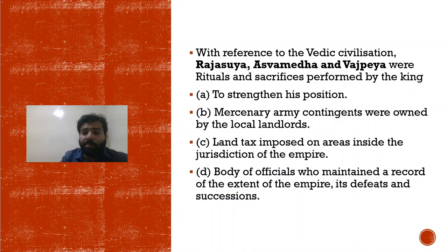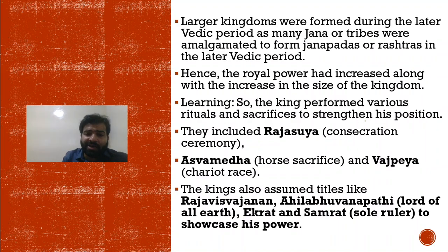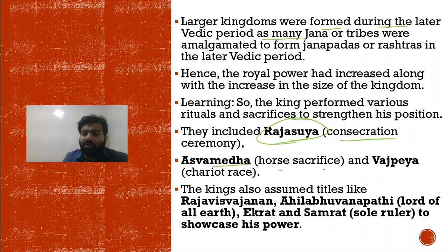Here is a practice question: With reference to Vedic civilization, Raja Suya, Ashwamedha, and Vajapeya were rituals and sacrifices performed by the king to strengthen his position. Larger kingdoms were formed during the later Vedic age. Rajasuya was the consecration ceremony; Ashwamedha involved releasing a horse to establish supremacy over neighbors. Kings assumed titles like Rajvishvajanan and Akhilbhuvanpati — 'Lord of all earth.'